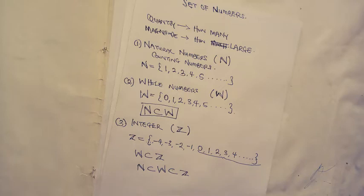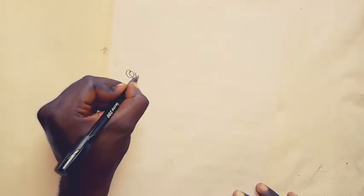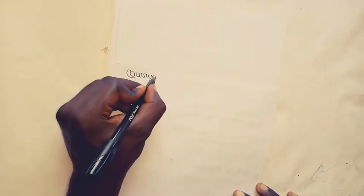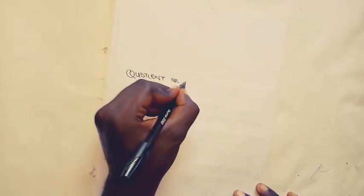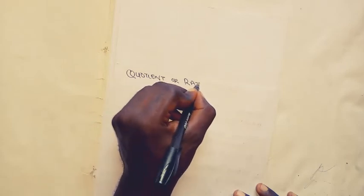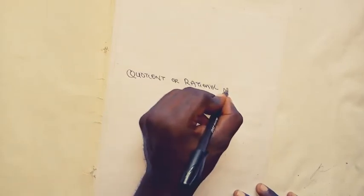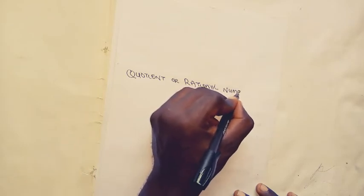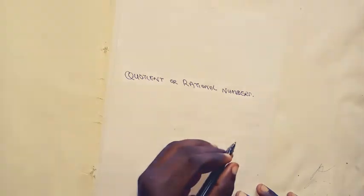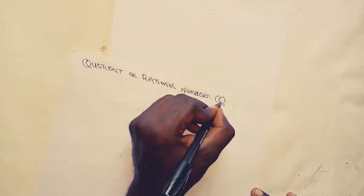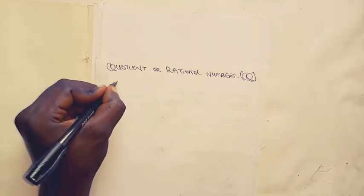The next set of numbers we need to quickly learn are called the quotient numbers — also called rational numbers — and we use the letter Q to represent them. Quotient numbers are numbers that can be written in the form p over q.